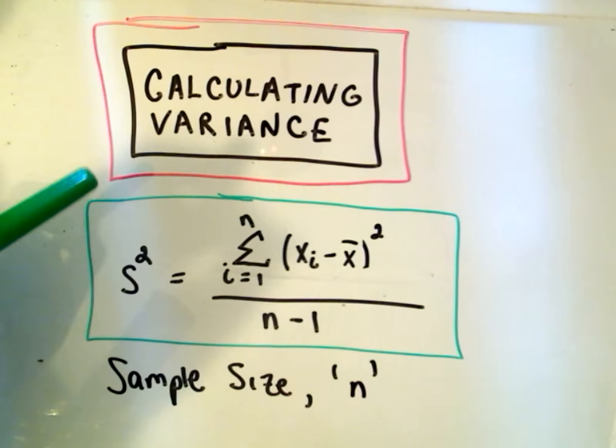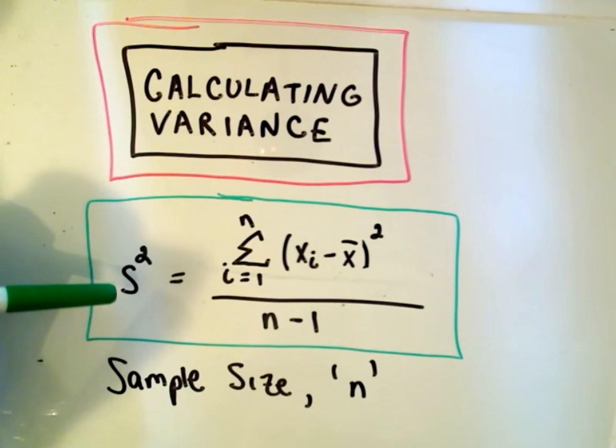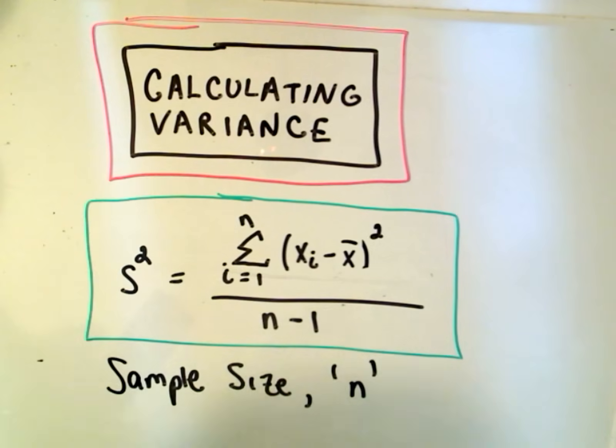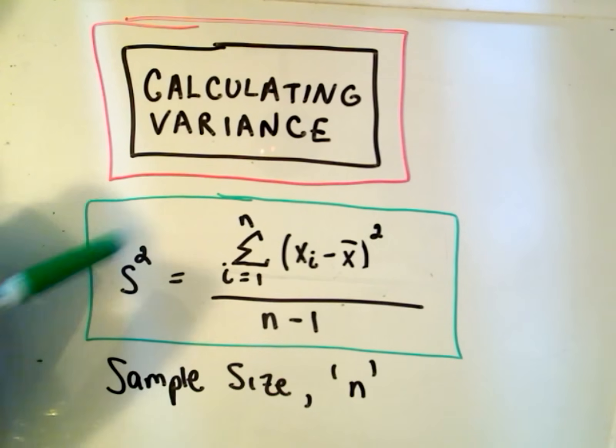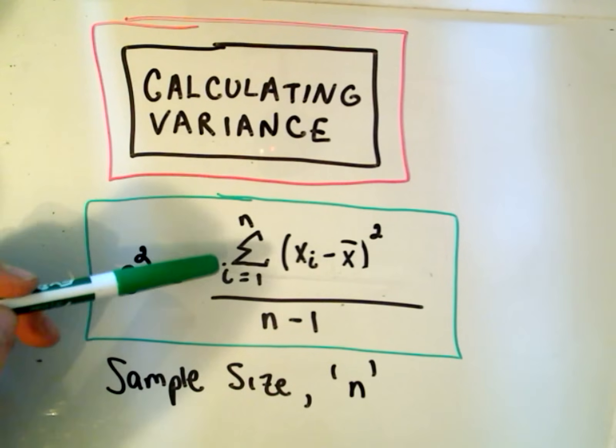In this video I want to talk about calculating the variance of a set of data. The variance formula that we use is labeled as s squared. There's a reason for this, because they talk about the standard deviation being the square root of variance. But anyway, back to the variance.